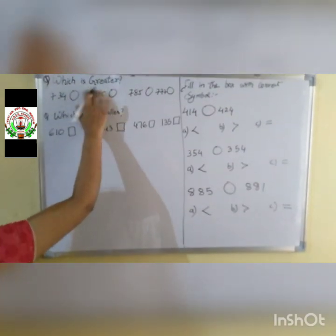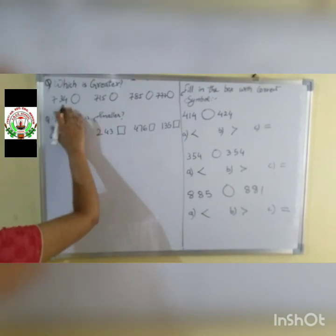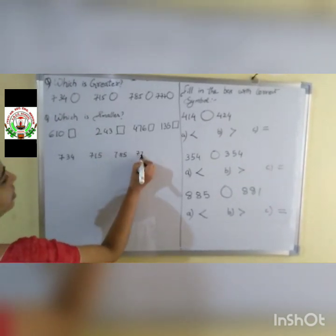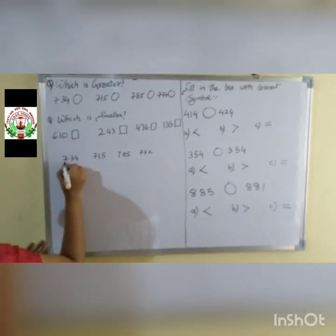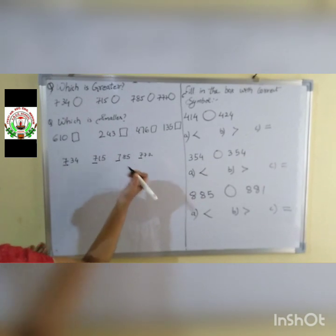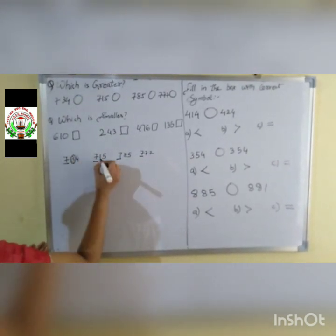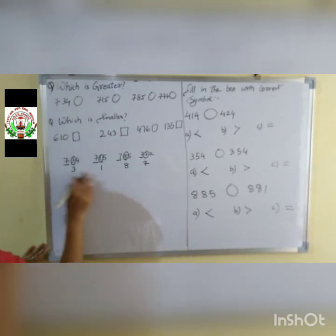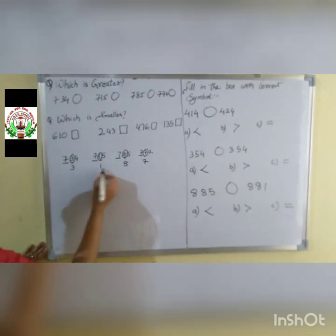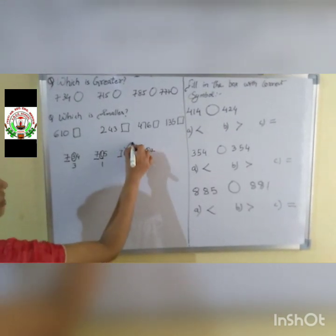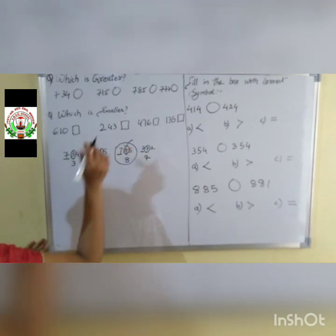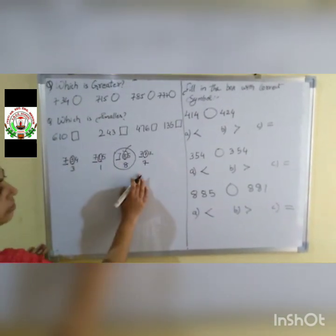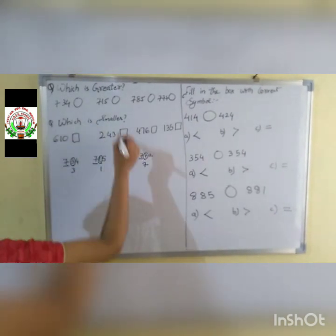Which is greater? There are 4 options: 734, 715, 785, 777. First, look at the hundreds digit — each has 7, so all are equal there. Then compare the tens digits: 3, 1, 8, 7. Among these, 8 is the greatest. So the whole number 785 is the greatest. We put a tick mark on 785.